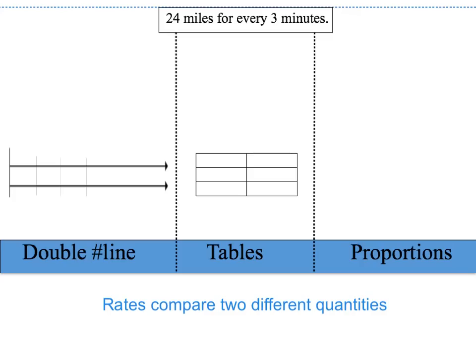In prior lessons, we introduced you to the definition of a rate. We know that rates compare two different quantities. So for example, miles per minutes, miles per gallon, miles per hour — those are all different units and different quantities. Basically, rates are ratios that compare two different quantities, and we've talked about ratios in previous lessons.